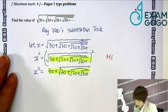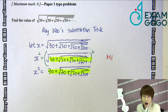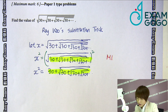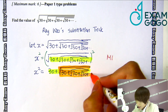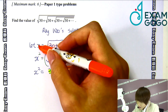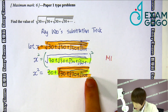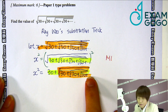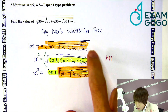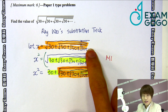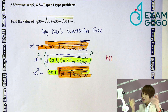Now you can actually see you have the same thing in common. The second term here — √(30 + √(30 + ...)) — is actually the same as x. Why? Because that term is still adding infinitely, and x is also adding infinitely, so the two terms are actually the same.